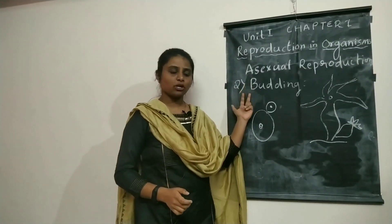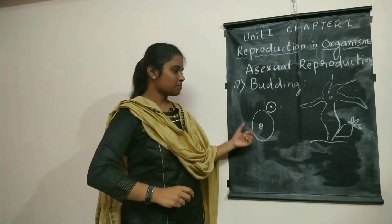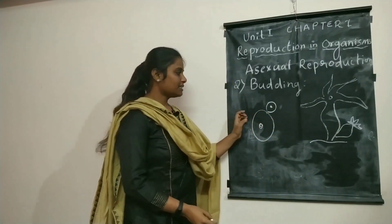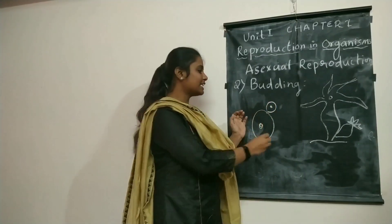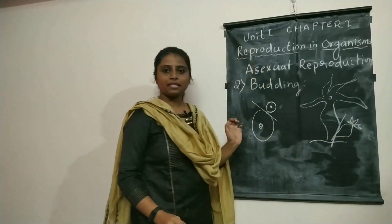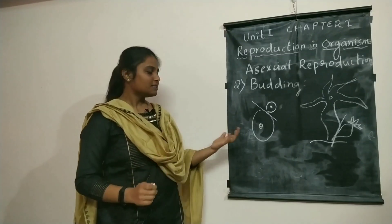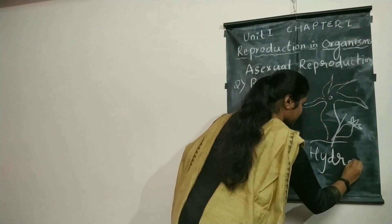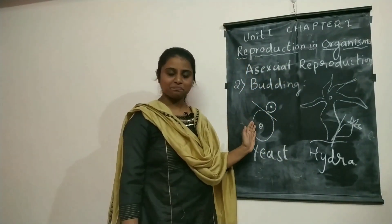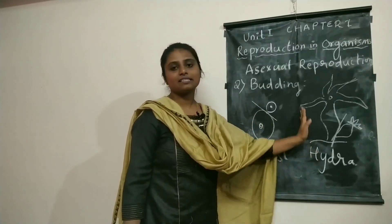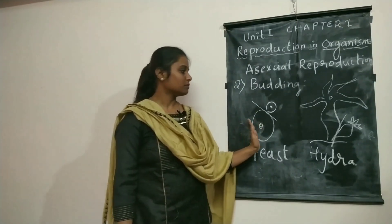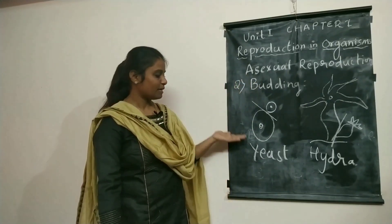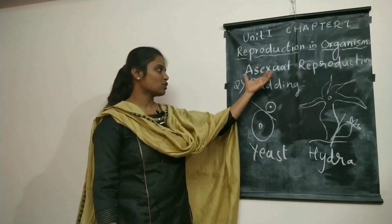The next type of asexual reproduction is budding. In budding, a small bud develops from the parent organism, starts to grow, and after reaching a certain stage it detaches from its parent and develops as an individual organism. It occurs in yeast and hydra. Yeast is a fungus belonging to kingdom Mycota, and hydra is an animal — they belong to different kingdoms but still follow the same type of asexual reproduction: budding.